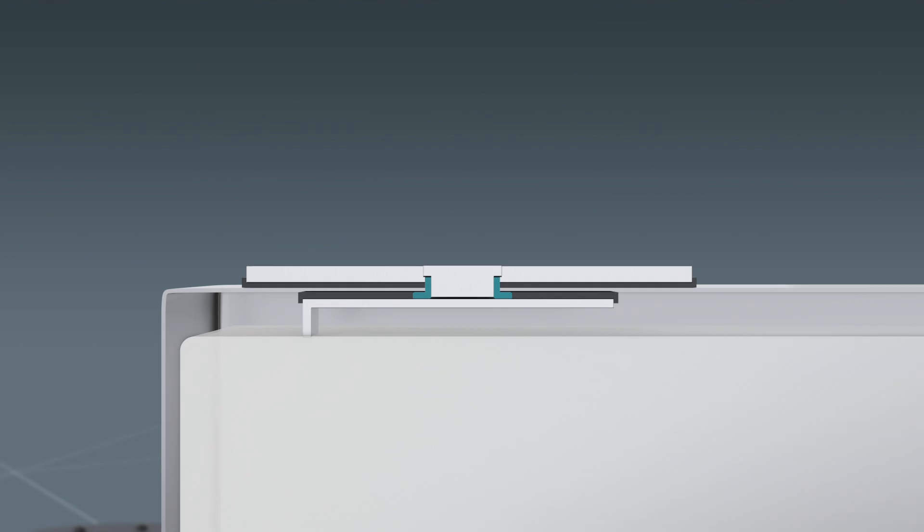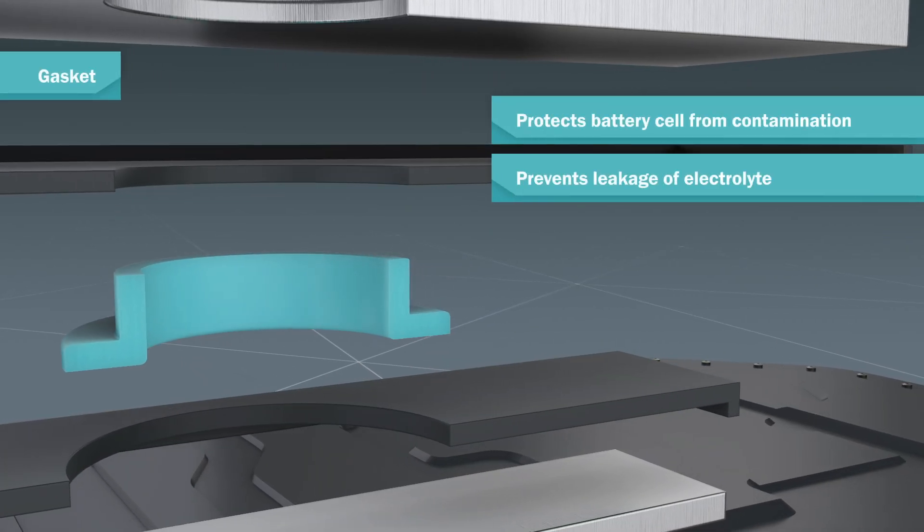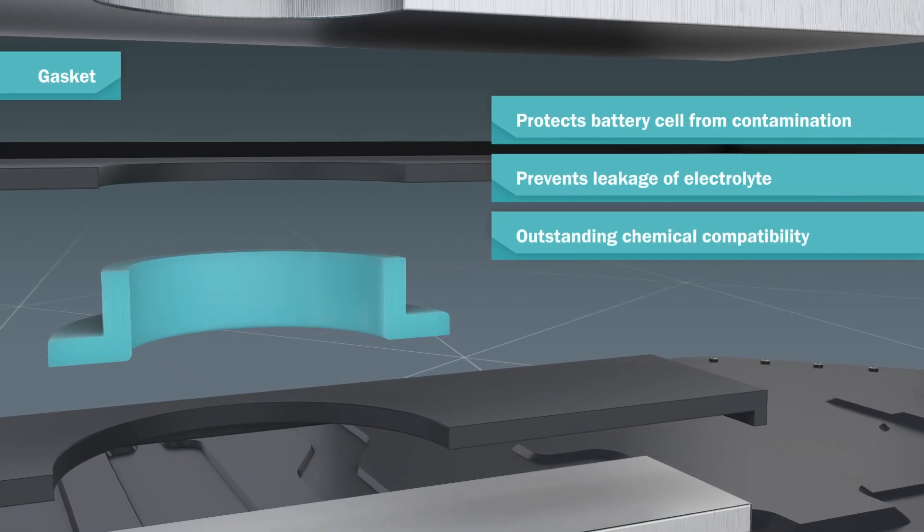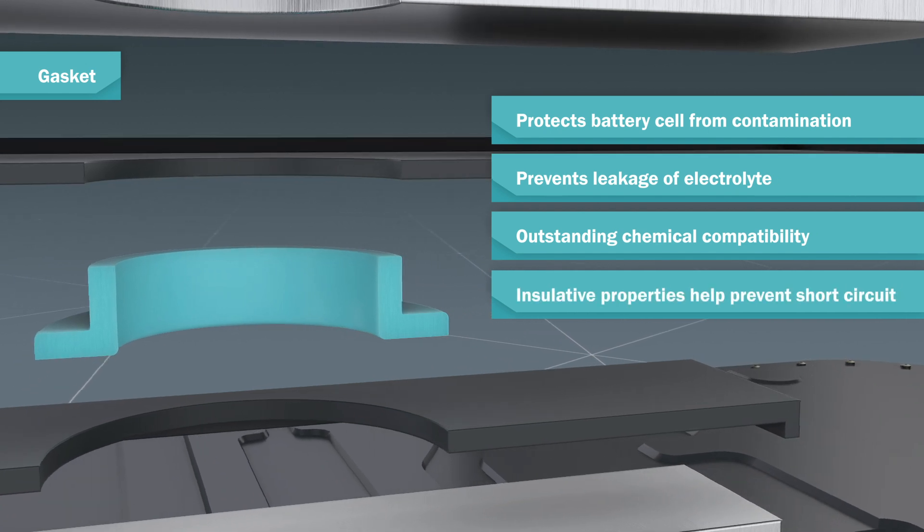The gasket is crucial for protecting the battery cell from contamination and leakage of electrolyte, while providing outstanding chemical compatibility.